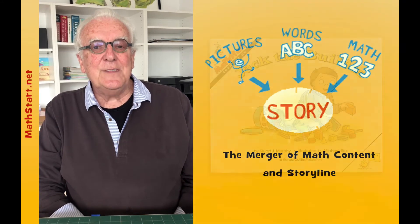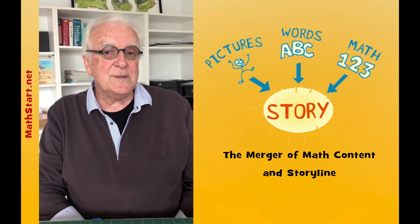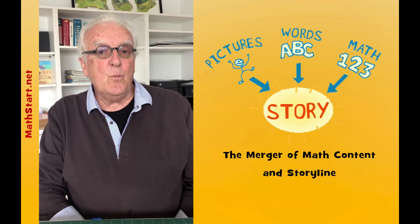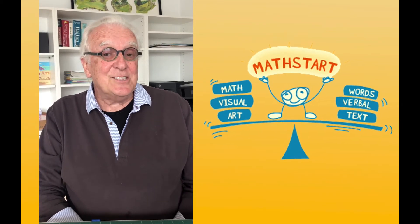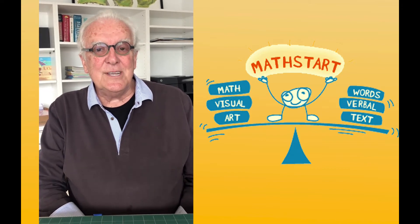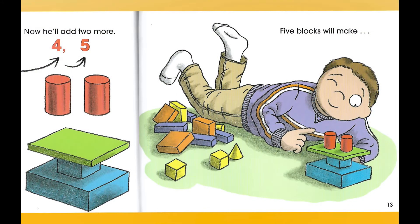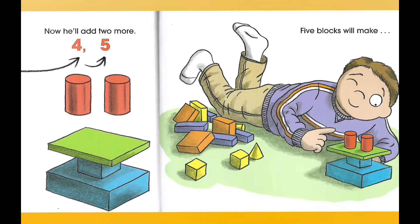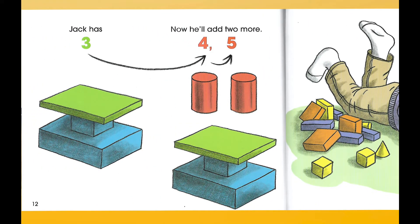As you go through the story, you have to think about the merger of the math content and the storyline. That's one of the hardest things in writing these books — trying to make sure they become one, so the math doesn't take over and become too workbook-like. The story has to keep moving and keep the child motivated and excited. For example, when Jack has three blocks and he's ready to add two more, he doesn't have to recount the three. He knows he's got three, so he can count on from three: three, four, five.